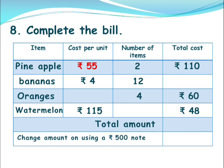Now for bananas, the cost per unit is 4 rupees and the person took 12 bananas. So you only need to multiply 4 into 12, and you will get the total cost of 48 rupees. For oranges, the cost per unit is not given, but they took 4 items and the total cost is 60 rupees. So 60 divided by 4 gives you the cost price as 15 rupees per unit.